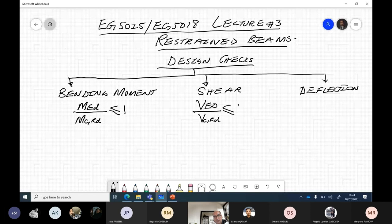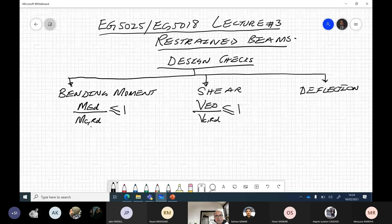V_ED over V_C,RD or V_PL,RD should be less than or equal to 1. M_ED is applied moment. M_C,RD is the resistance or capacity, moment capacity of the section.